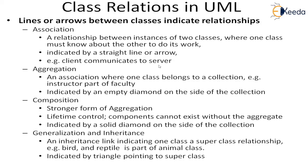Then there is aggregation — an association where one class belongs to a collection. For example, an instructor is a part of a faculty. It is indicated by an empty diamond on the side of the collection. Then we have composition, a stronger form of aggregation. Here the component cannot exist without the whole — it has a lifetime control; the components cannot exist without the aggregate. These are indicated by a solid diamond on the side of the collection.